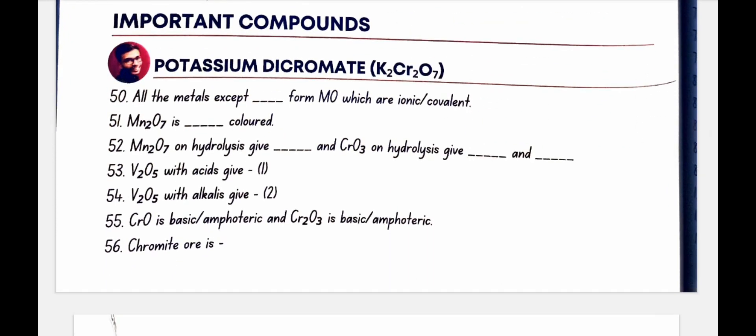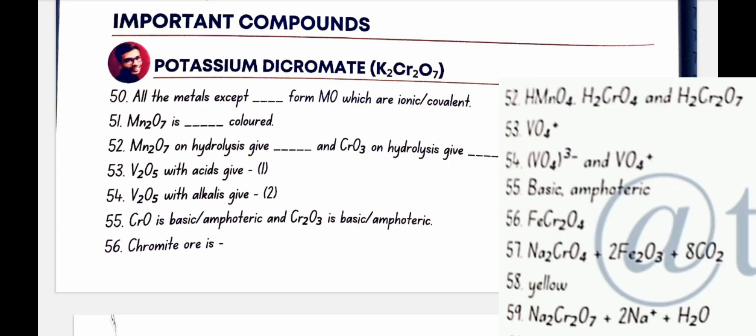Important compounds. Potassium dichromate, K2Cr2O7. All the metals except scandium form MO which are ionic. MN2O7 is green colored. MN2O7 on hydrolysis give HMnO4 and CrO3 on hydrolysis give H2CrO4 and H2Cr2O7.